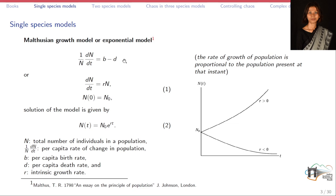So 1/N × dN/dt equals the birth rate minus the death rate. The difference between the per capita birth rate and the per capita death rate is termed the intrinsic rate of growth, represented by R. This Malthusian mathematical model, proposed in 1798, was one of the simplest models in ecology, represented by the initial value problem dN/dt = RN, with the initial population at constant value N₀.